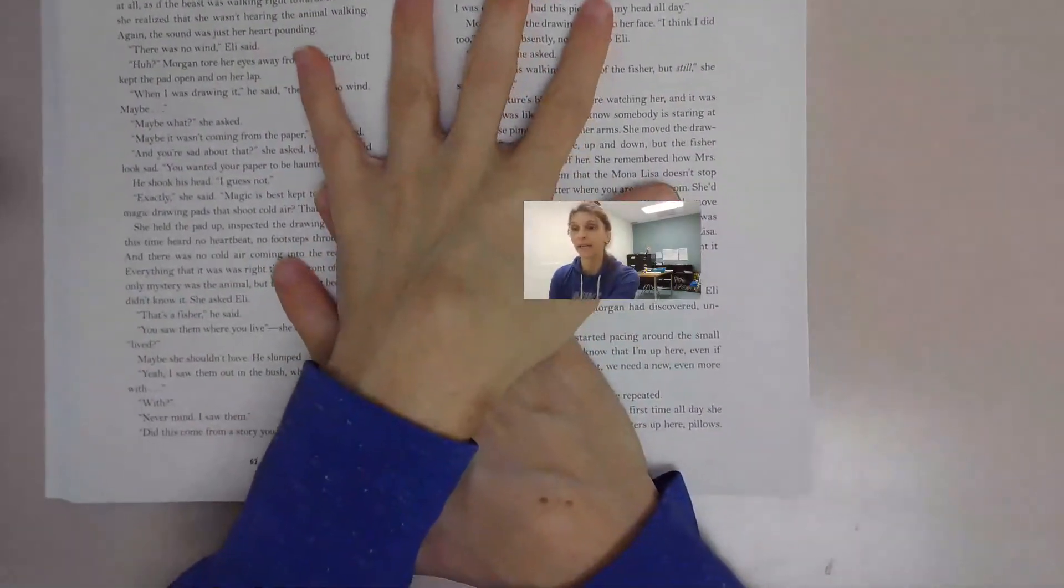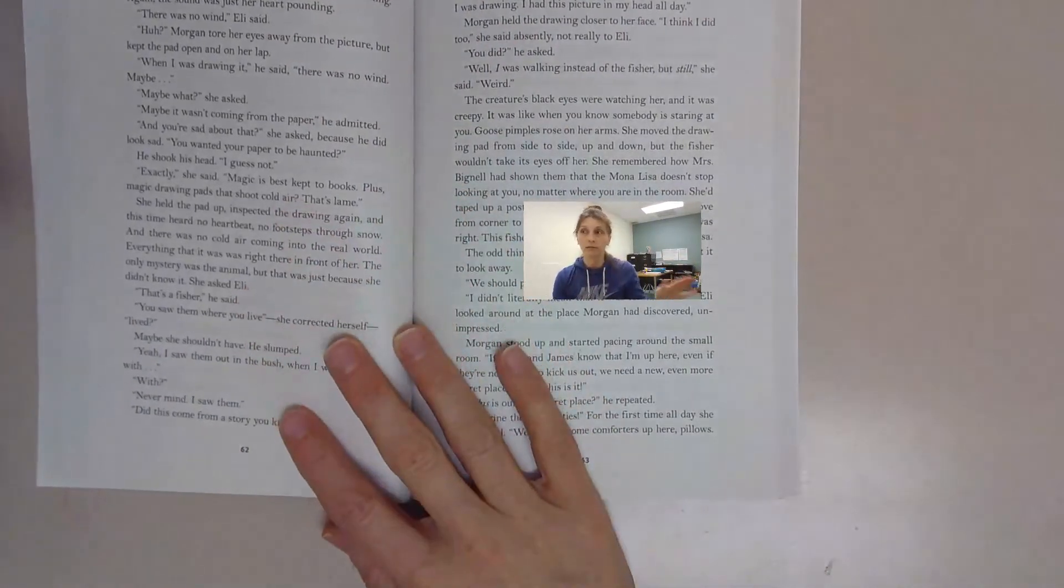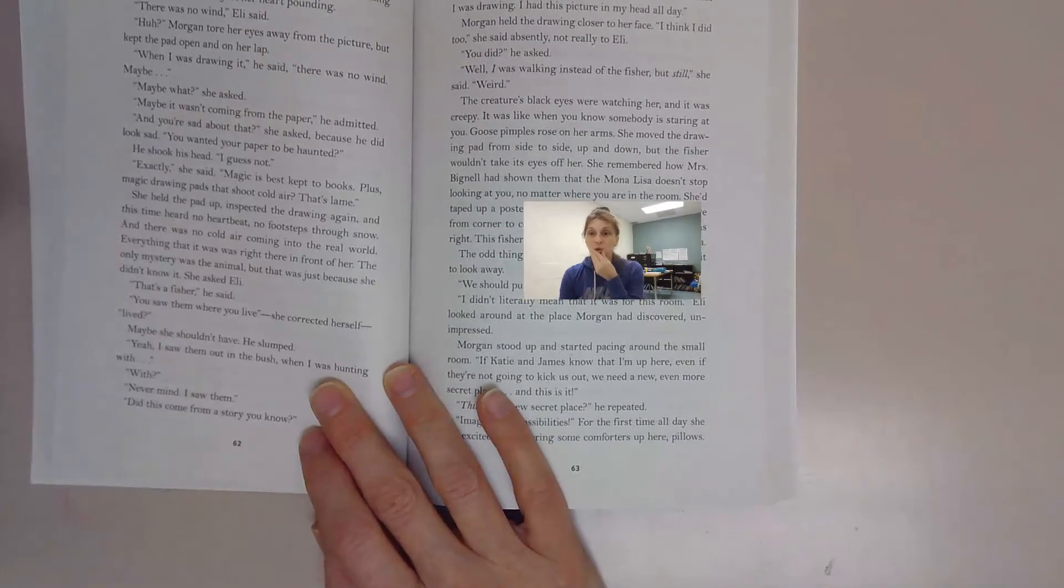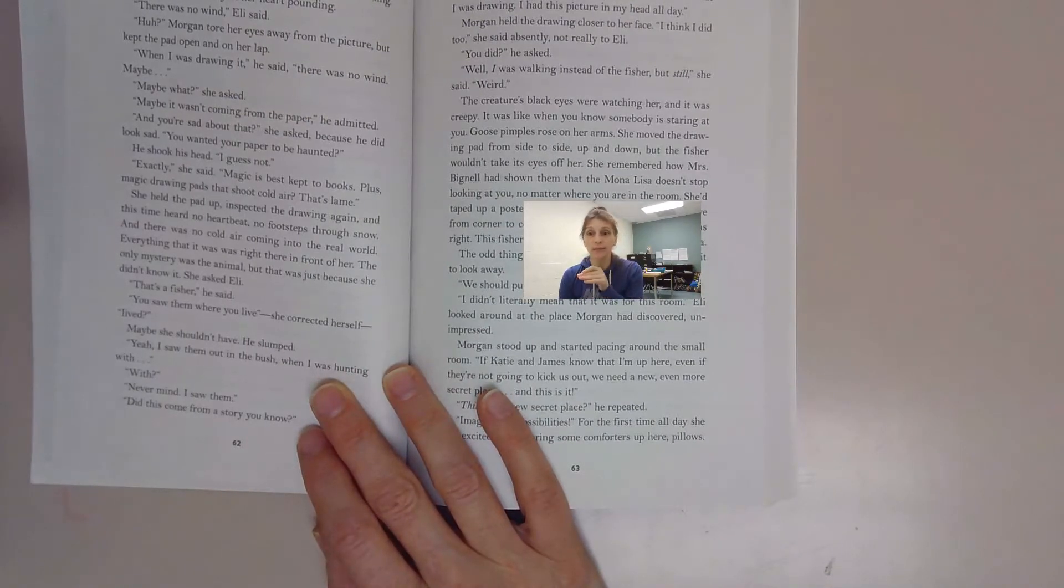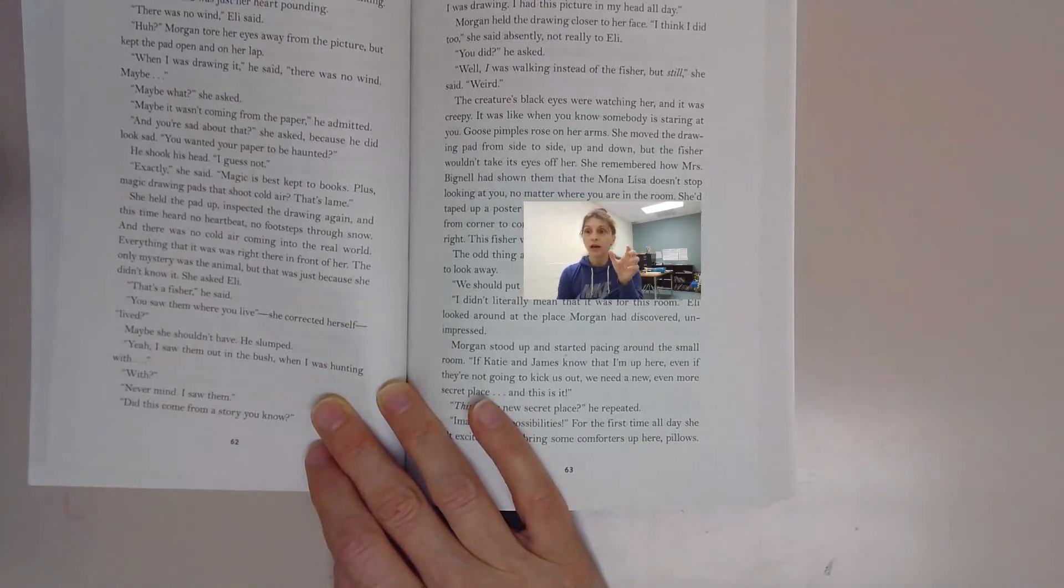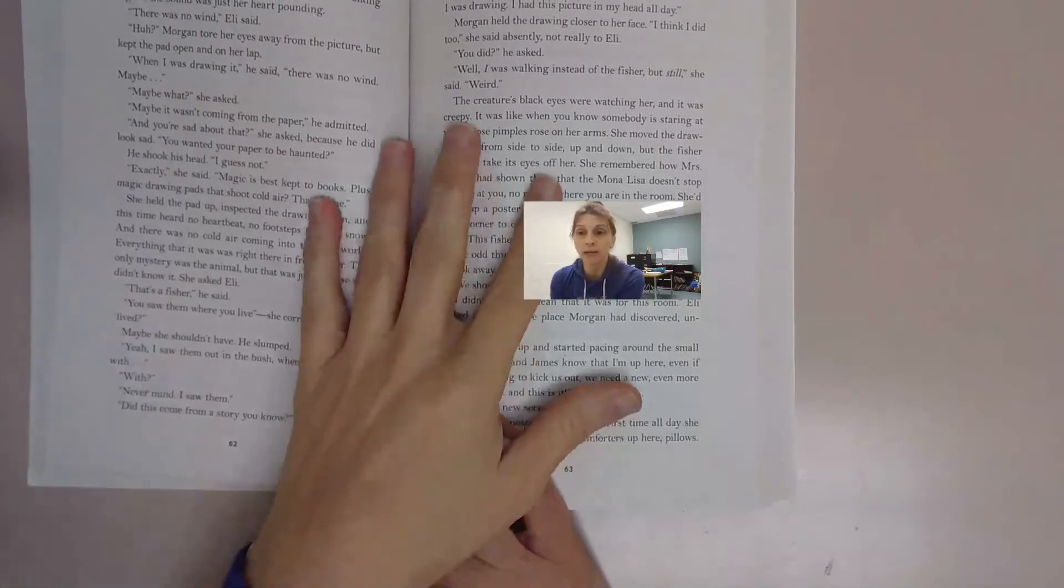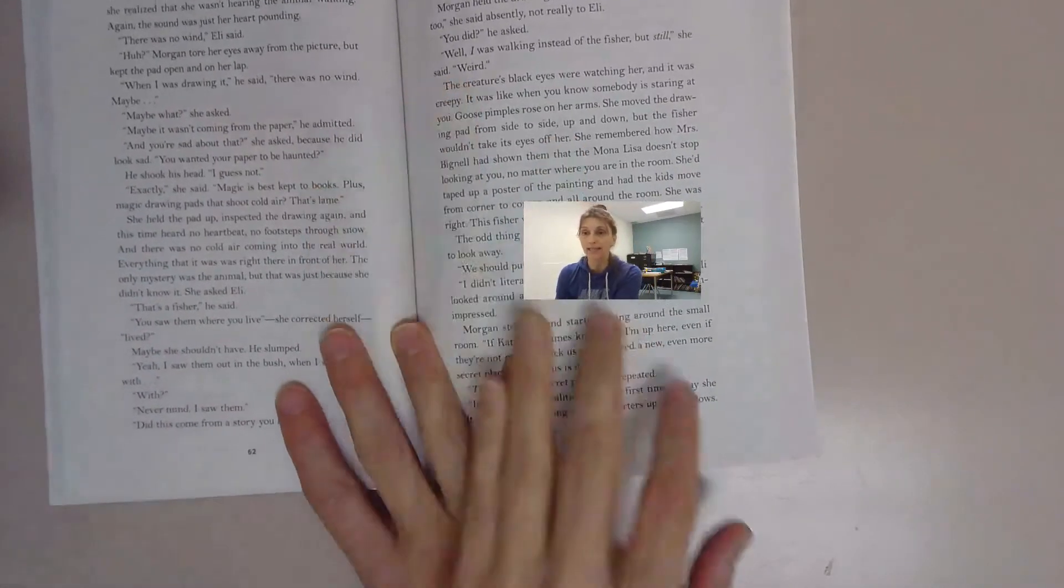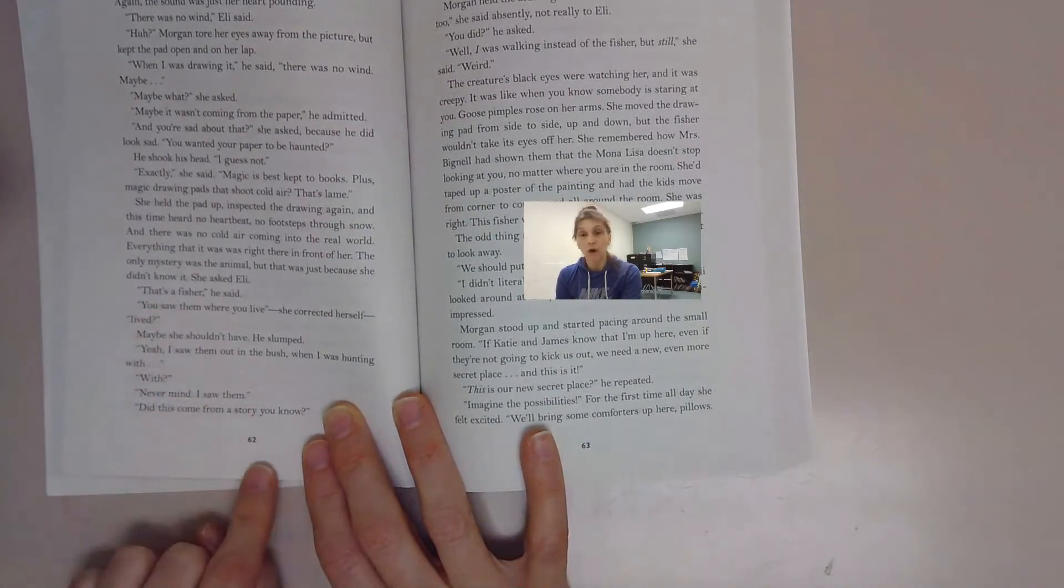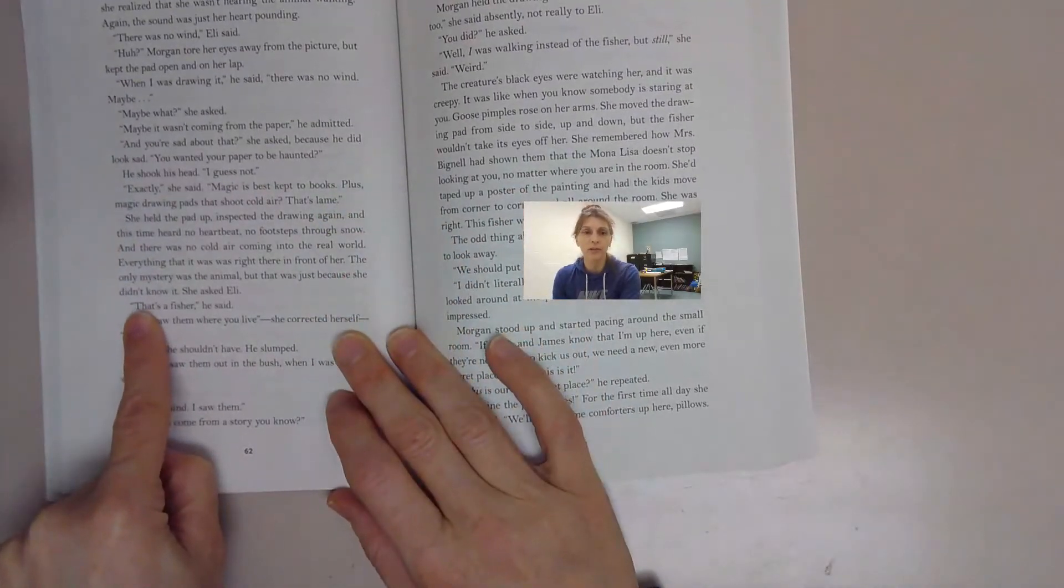So we have Eli has joined Morgan up in the secret room in the attic that Morgan opened up, and he drew a picture and is showing it to Morgan. On it he has a picture of a creature, an animal, but walking upright like a human. Morgan has asked him what kind of animal that is and he says it's a fisher.